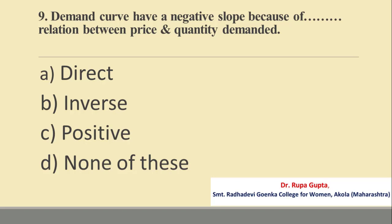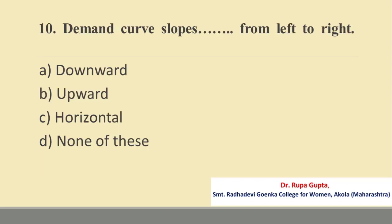Question number 10. Demand curves have a negative slope because of a dash relationship between price and quantity demanded. Options are: A. Direct, B. Inverse, C. Positive, D. None of these. The correct answer is B, Inverse.